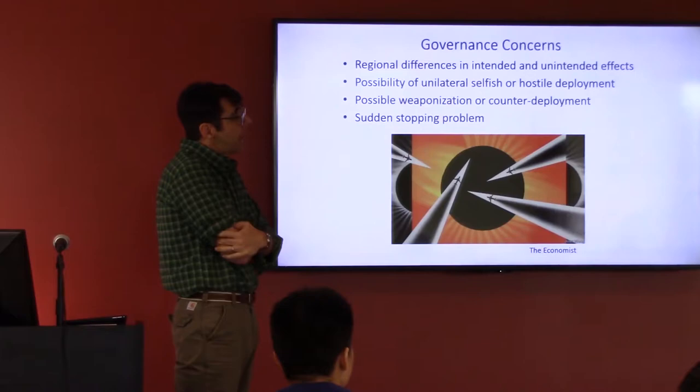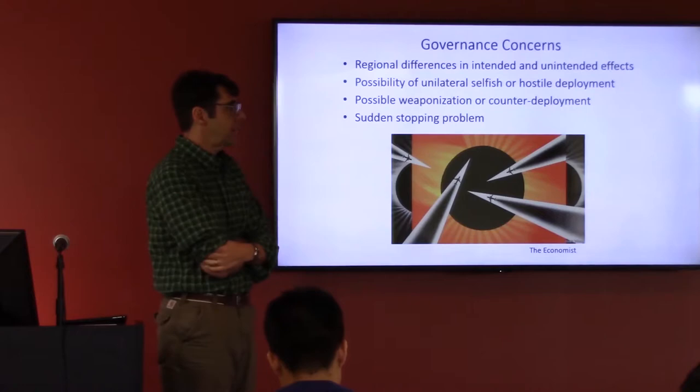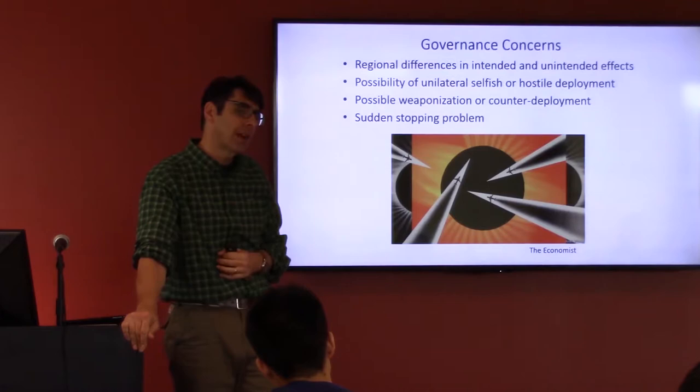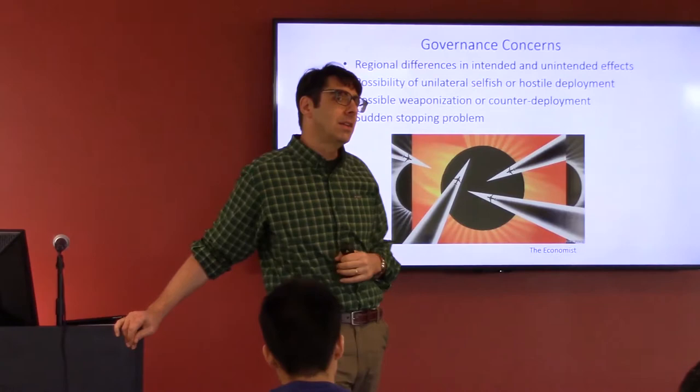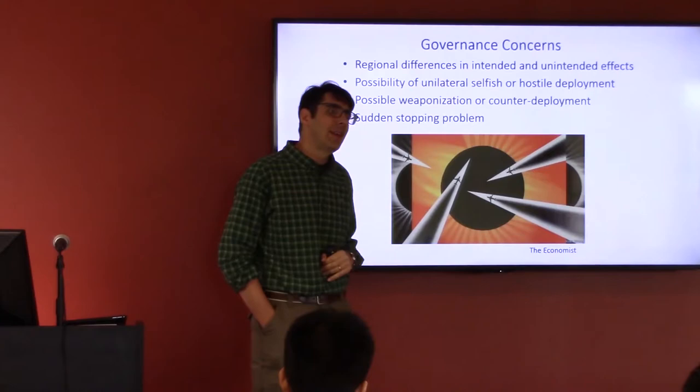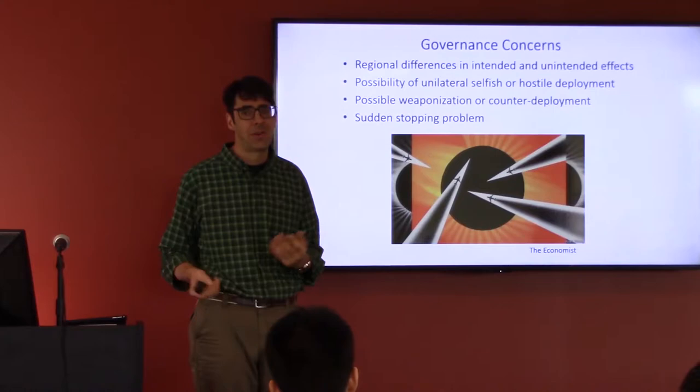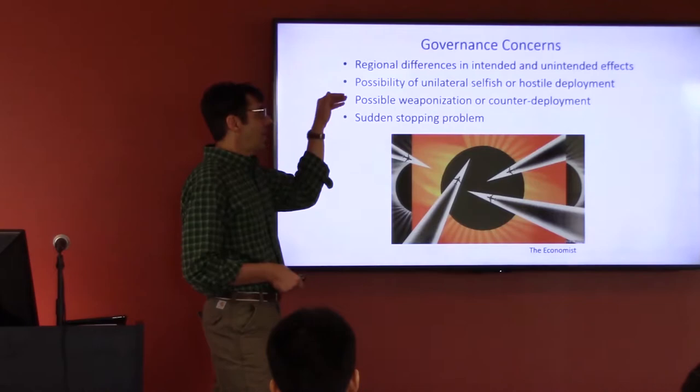There are governance concerns. As I mentioned, there might be regional differences in both the intended and unintended effects — this could cause conflict. There's a possibility of unilateral deployment, which could be selfish in the sense of a nation's own interest, or even potentially hostile deployment. This was raised early in the geoengineering literature. I think the scale of solar radiation management would be so large that nobody could deploy it in a way that was non-detectable — a rogue actor could easily be discouraged or prevented.